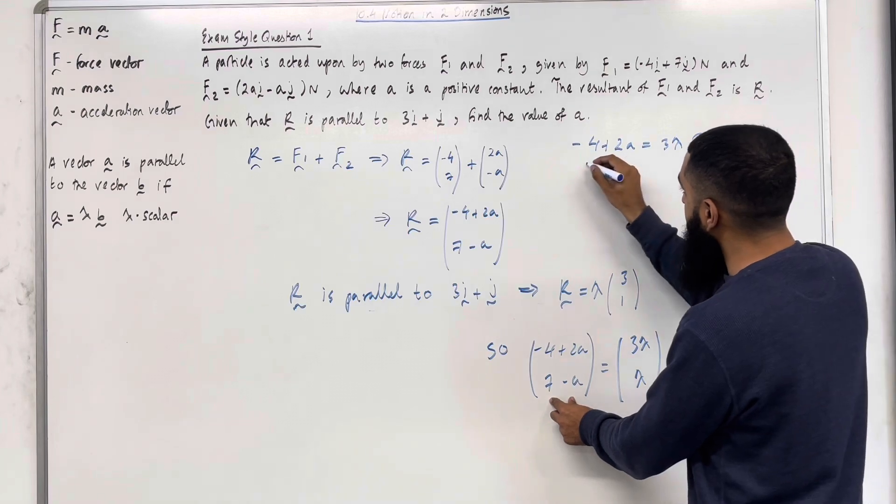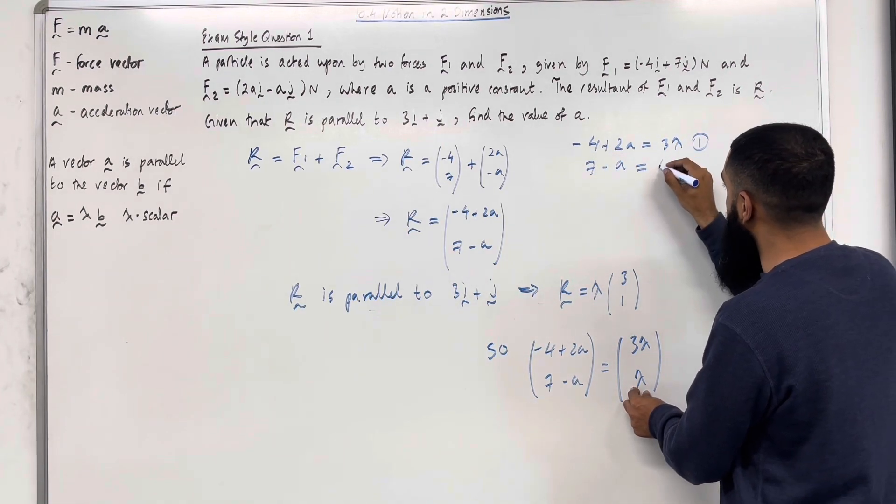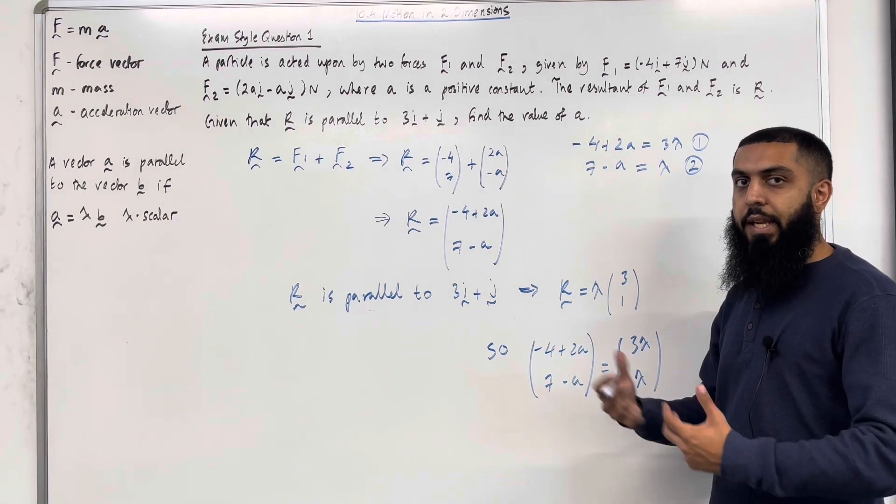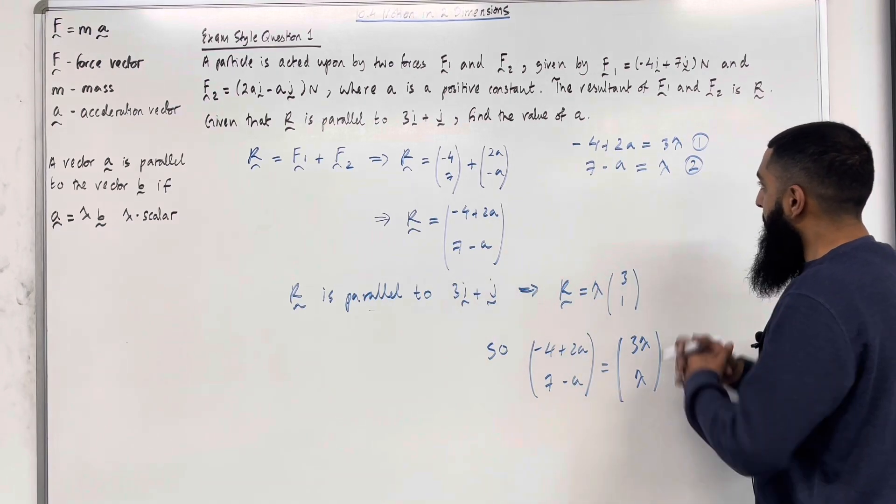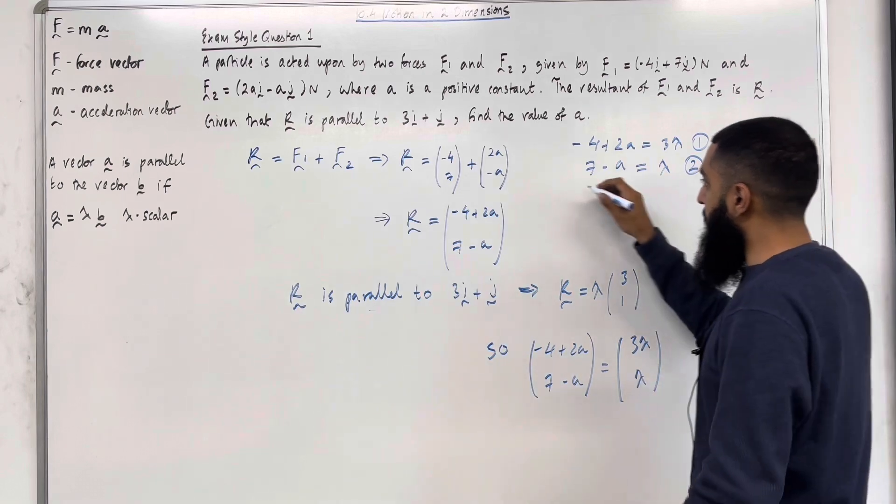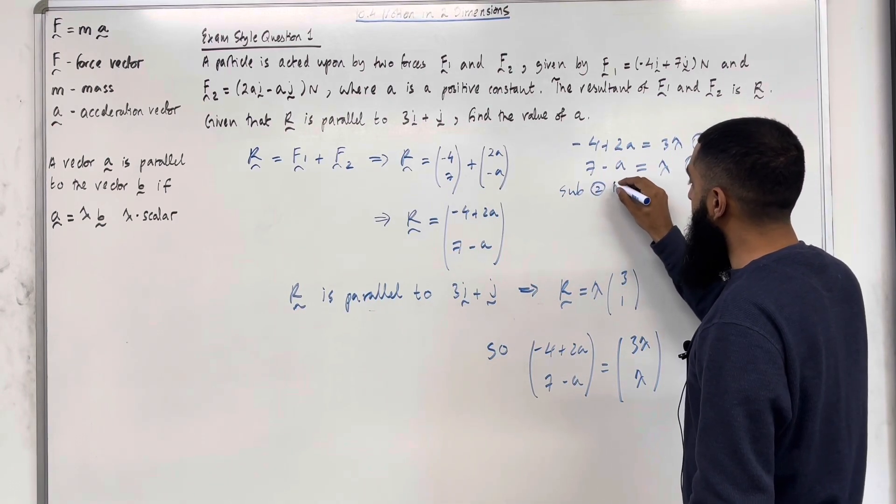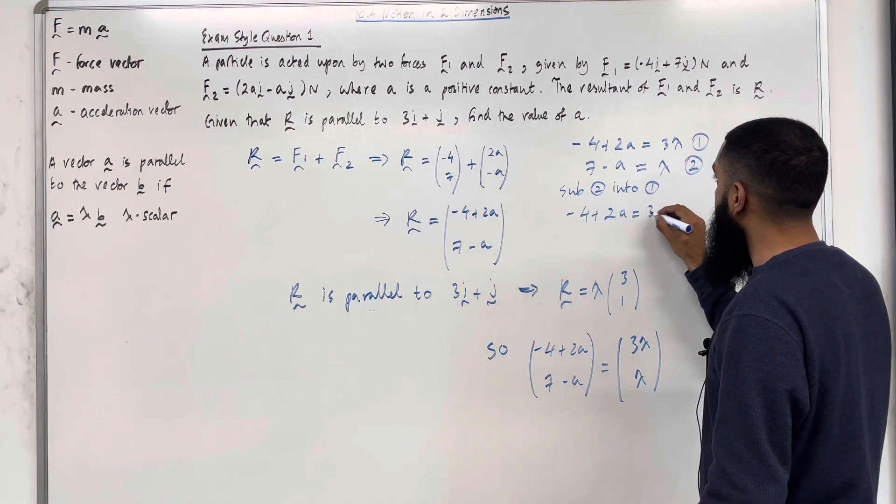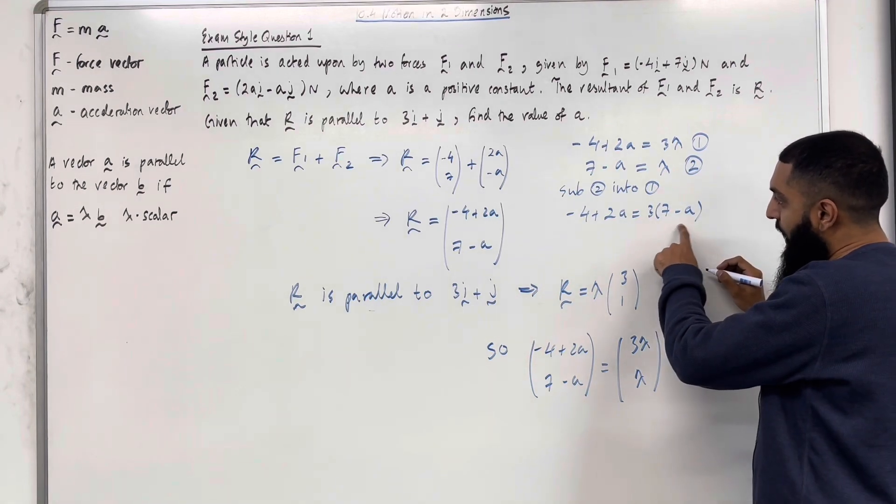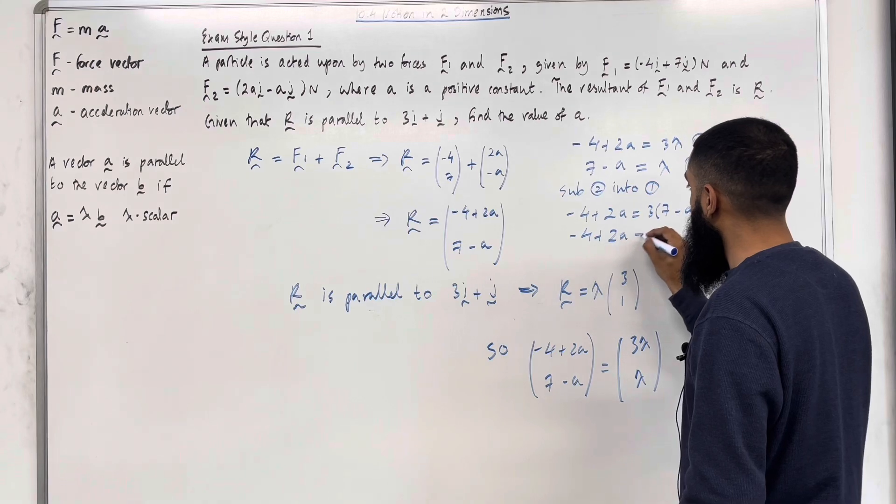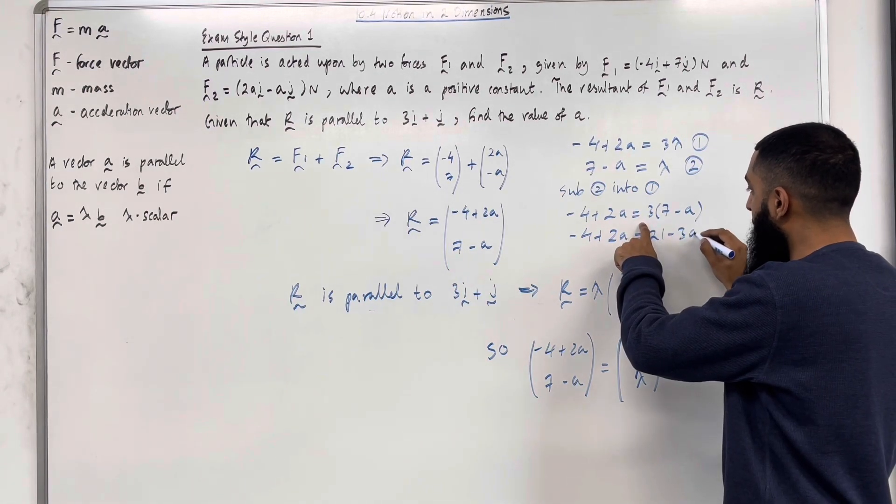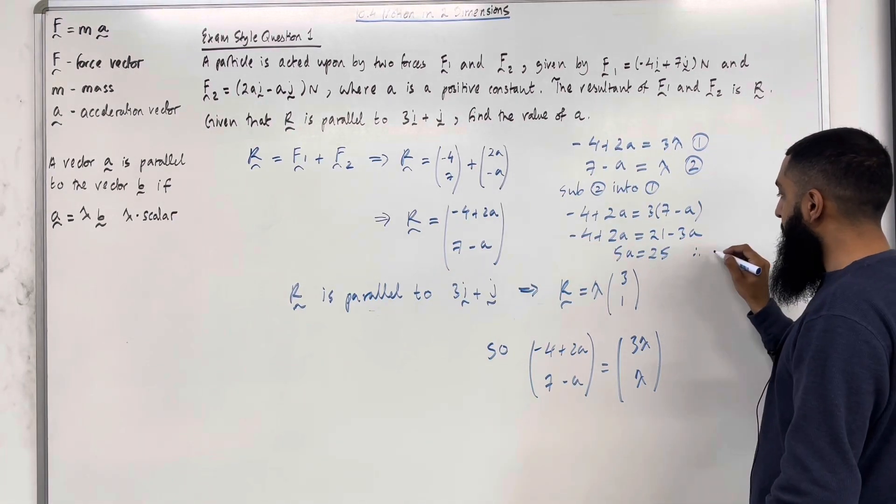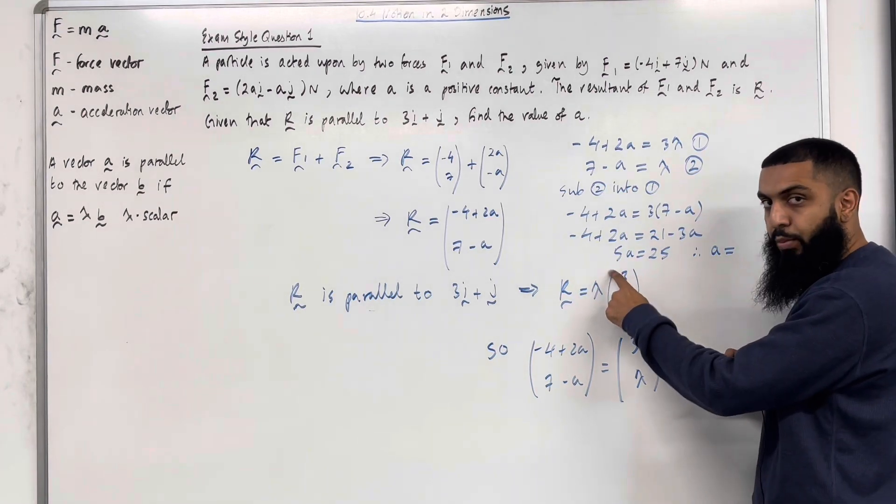I've got two equations I can now solve simultaneously in order to work out a. I can substitute equation 2 into equation 1. I get minus 4 plus 2a equals 3 lots of 7 minus a. Expanding this bracket, I get 21 minus 3a. If I rearrange, I get 5a equals 25. Therefore, a equals 25 divided by 5, which is 5.